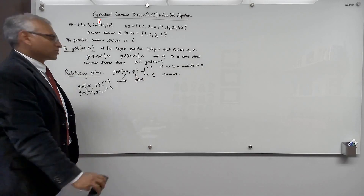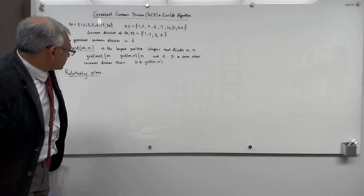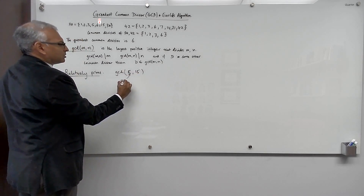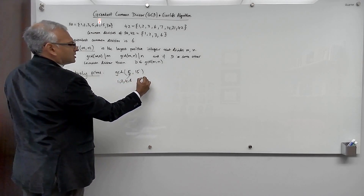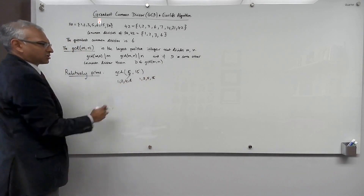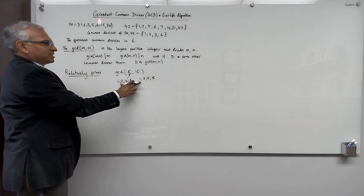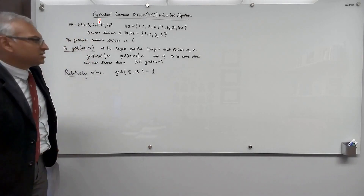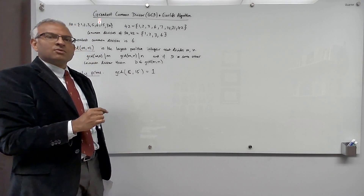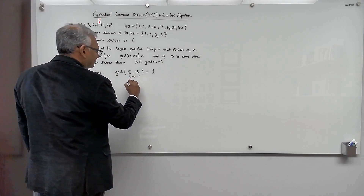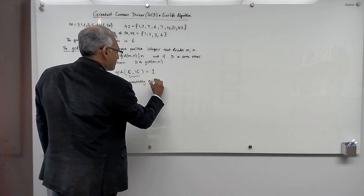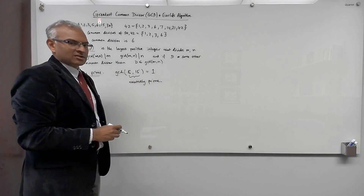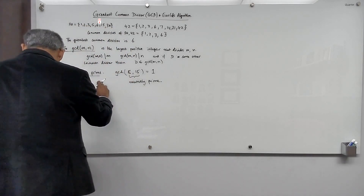It's possible for the GCD to be 1 even for non-primes. Consider the GCD of 8 and 15. The divisors of 8 are 1, 2, 4, and 8, and the divisors of 15 are 1, 3, 5, and 15 — nothing in common except 1. So the greatest common divisor is 1. It's possible for the greatest common divisor to be 1 even if the numbers are not prime. In this case we say that these two numbers are relatively prime. So it's possible for numbers which are not prime to be relatively prime.